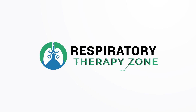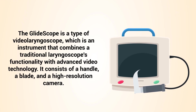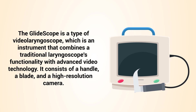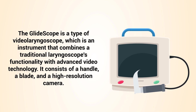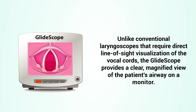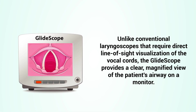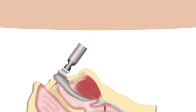The GlideScope is a type of video laryngoscope, which is an instrument that combines a traditional laryngoscope's functionality with advanced video technology. It consists of a handle, a blade, and a high-resolution camera. Unlike conventional laryngoscopes that require direct line-of-sight visualization of the vocal cords, the GlideScope provides a clear, magnified view of the patient's airway on a monitor.